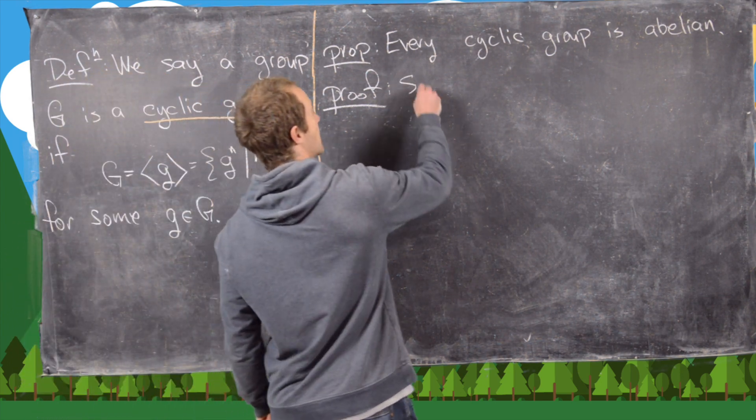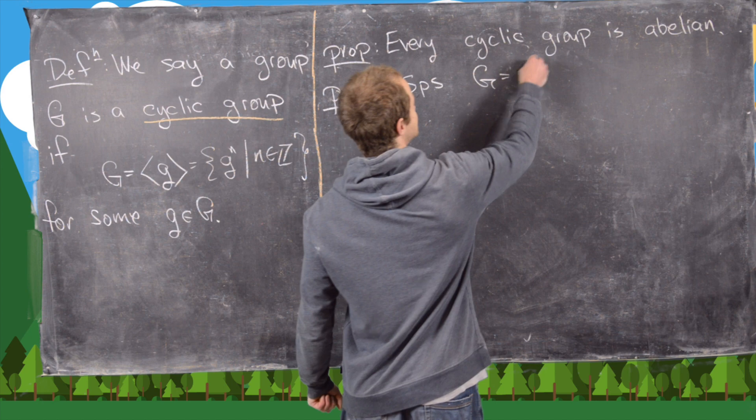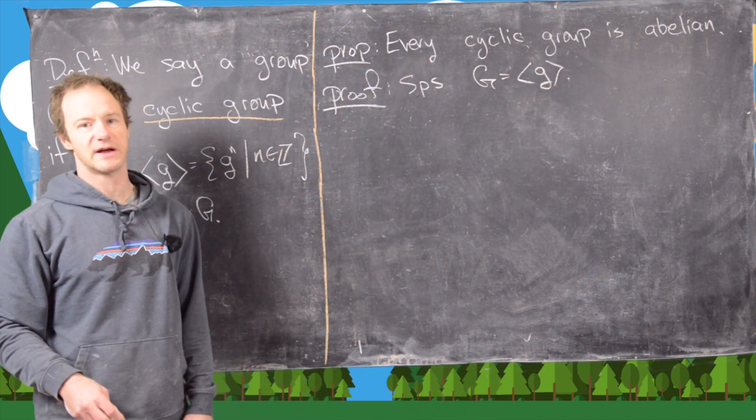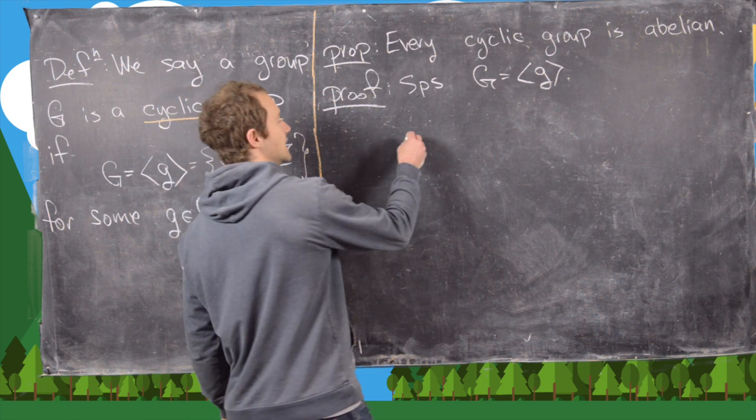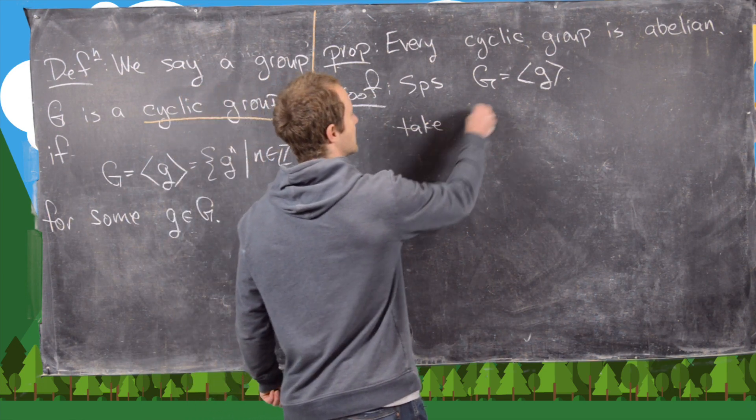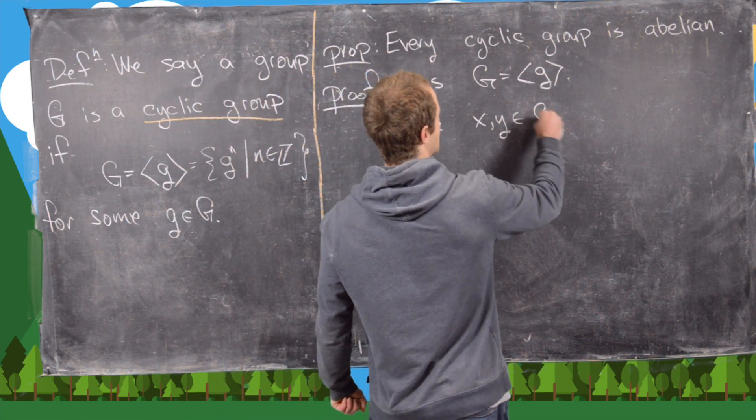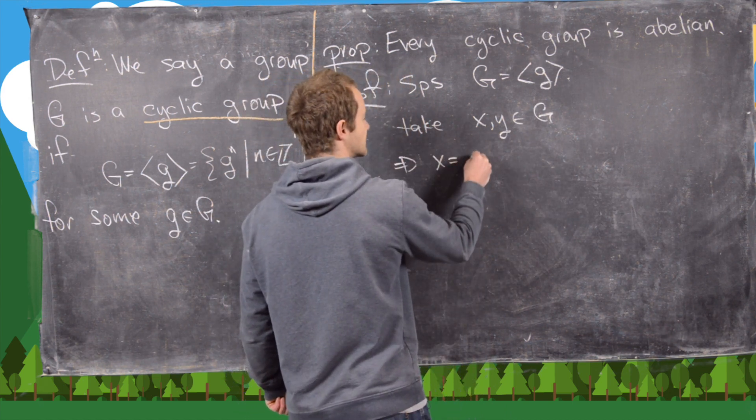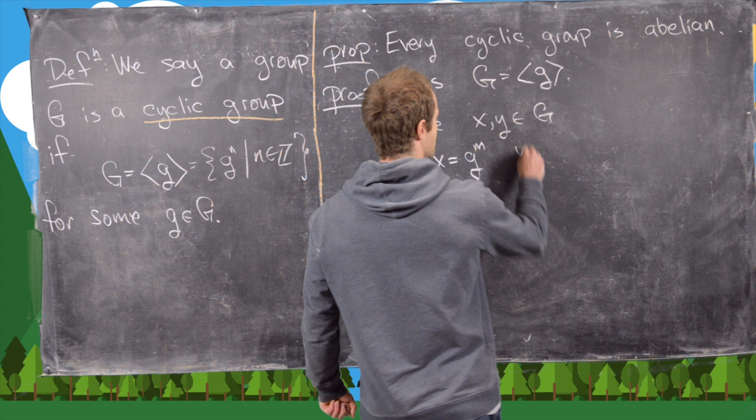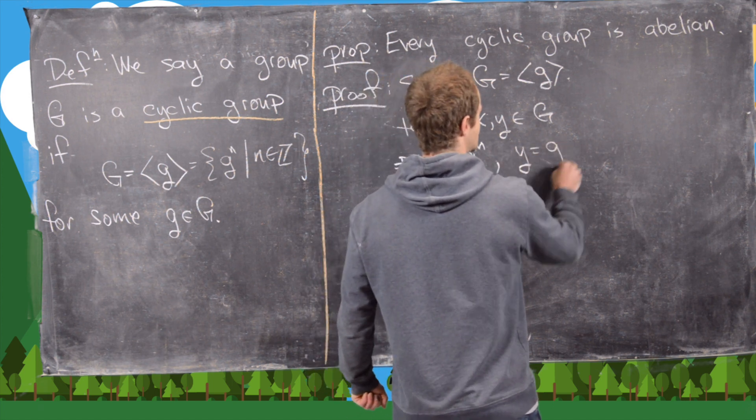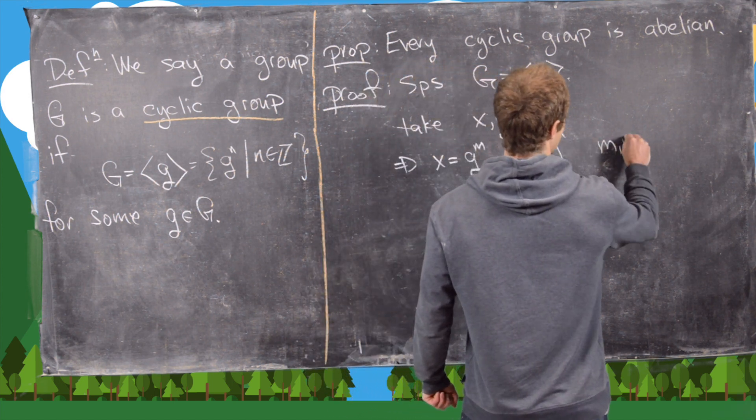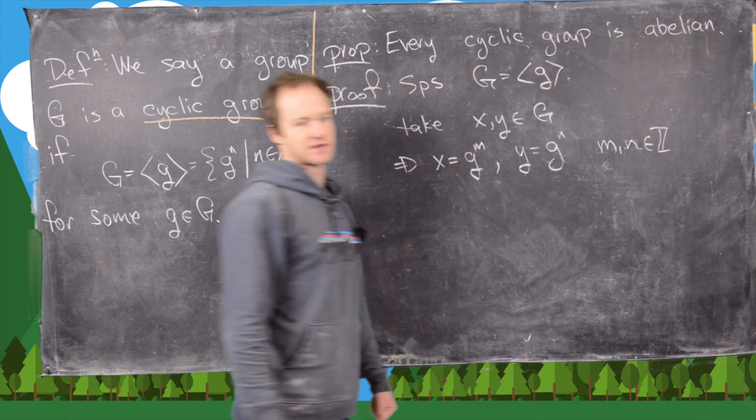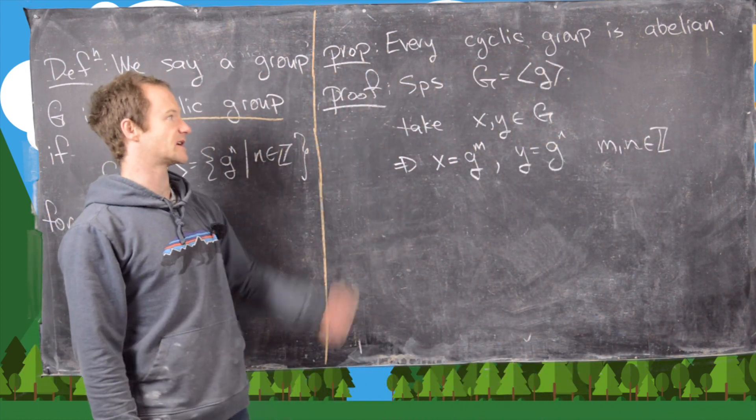Let's suppose that G is cyclic, so in other words we can write G as generated by g like this. Then let's take x and y in G, and notice that means x equals g to the m and y equals g to the n for some m and n in the integers, because that's what it means to come from this cyclic group.